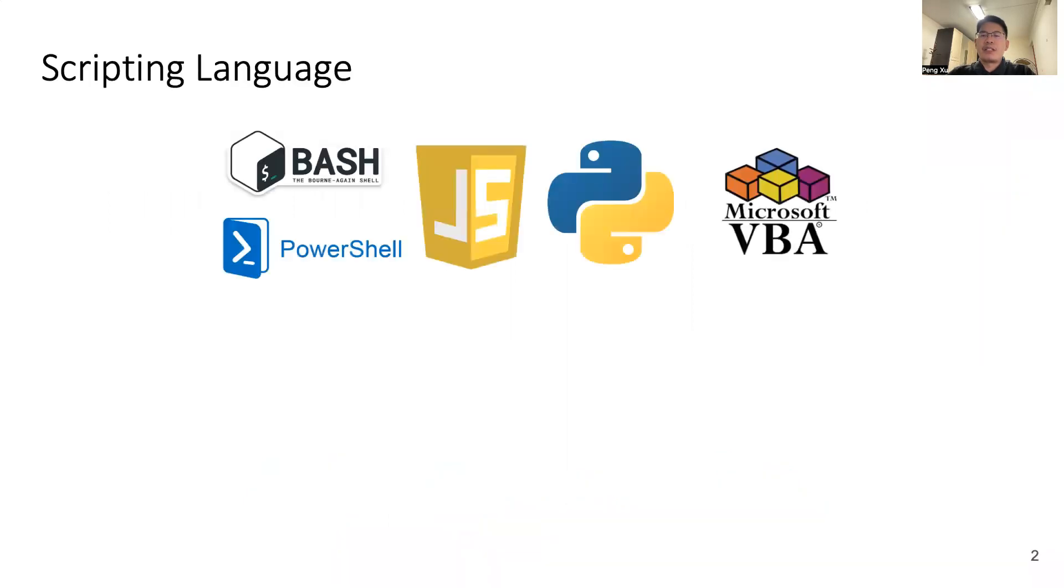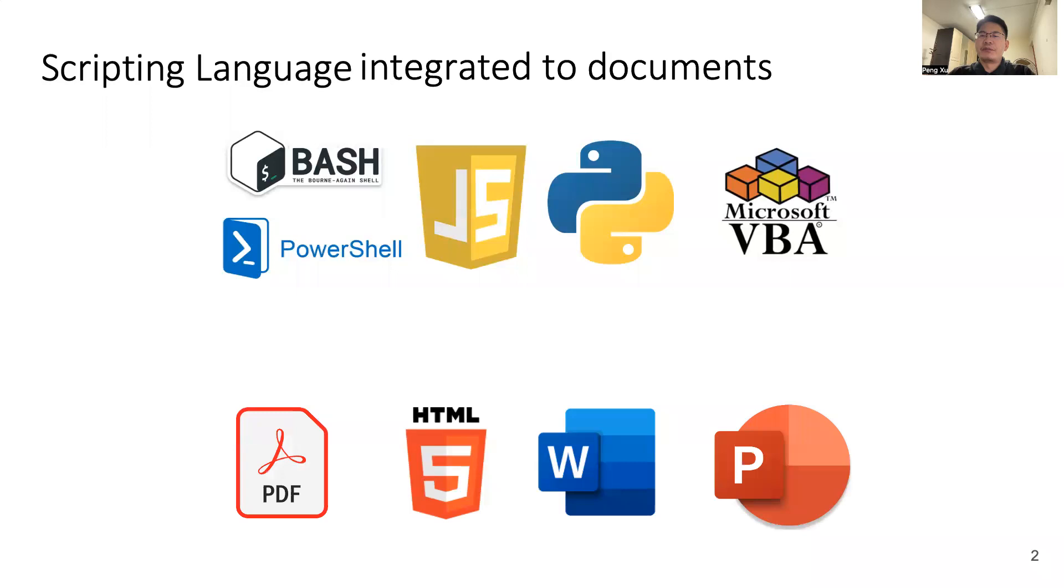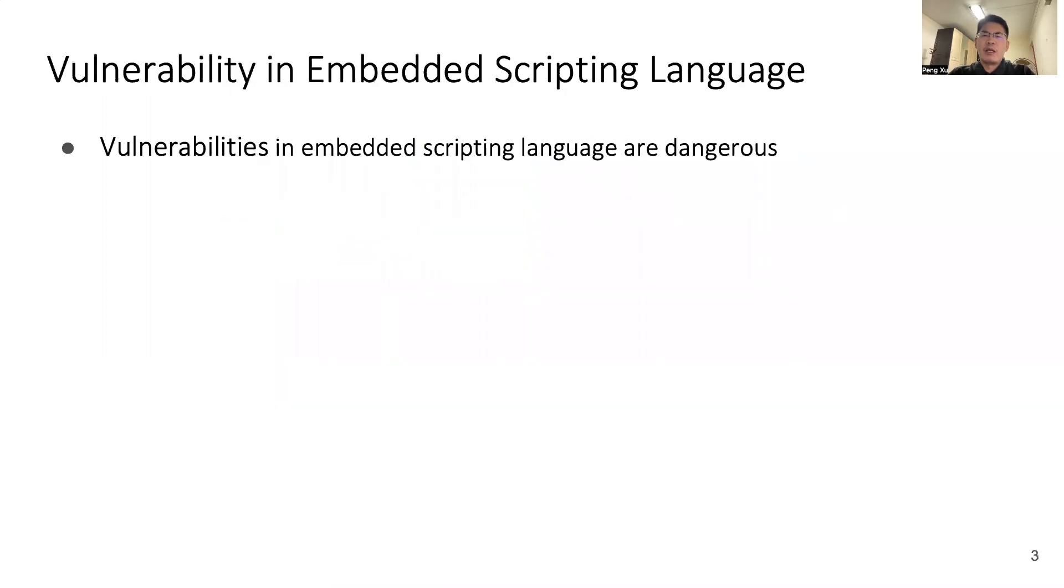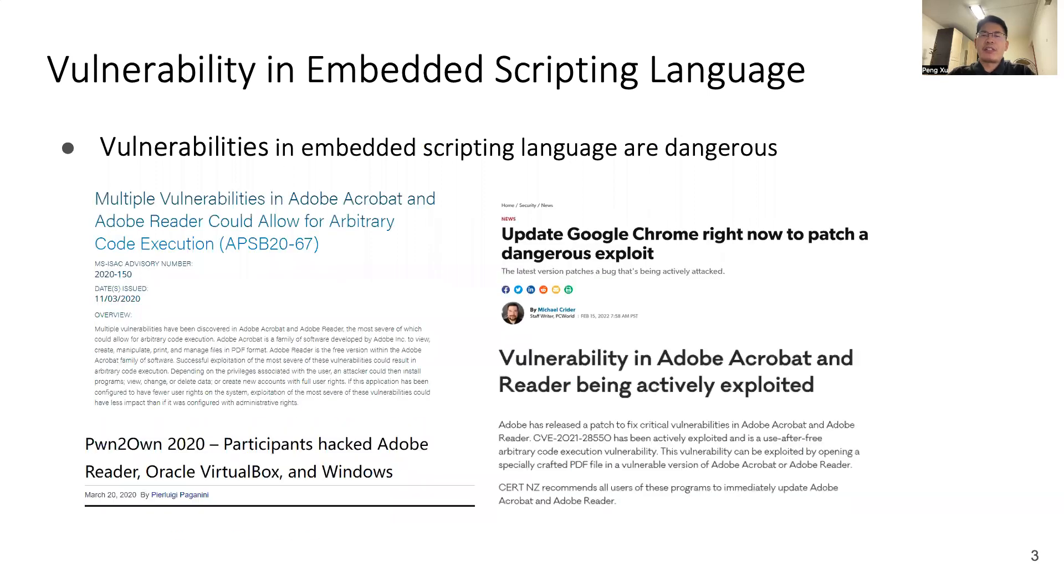As we all know, scripting languages are widely useful and powerful. They're easy to learn and develop. Nowadays, scripting languages are integrated into document processing programs. For example, JavaScript code is integrated into PDF and HTML, VBA code is integrated into Office documents. In these programs, embedded script code are usually used to manipulate content elements of a document. Vulnerabilities in these embedded scripting languages are very dangerous. Attackers can exploit vulnerabilities in these programs to execute arbitrary code and take control of the system. Every year, many vulnerabilities are discovered in embedded scripting systems. So it's essential for us to design an effective method to find bugs in embedded script code.